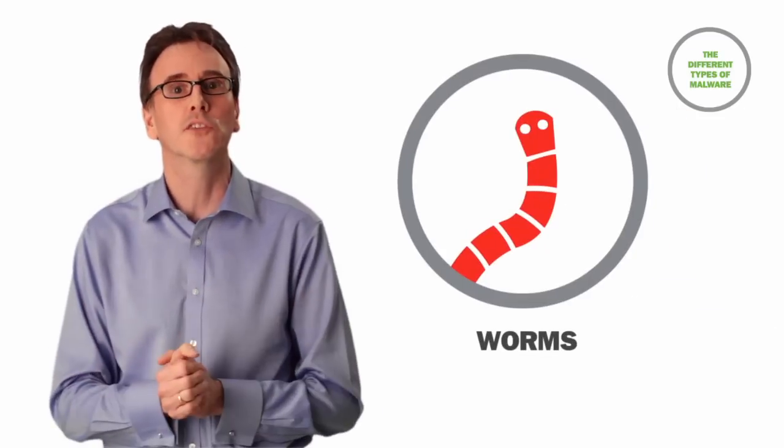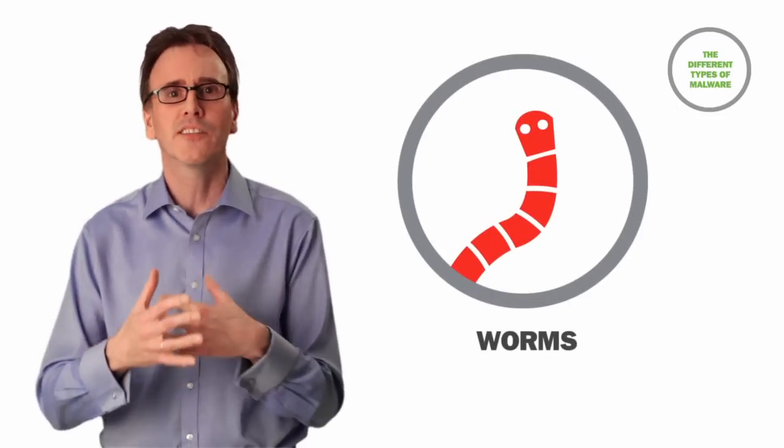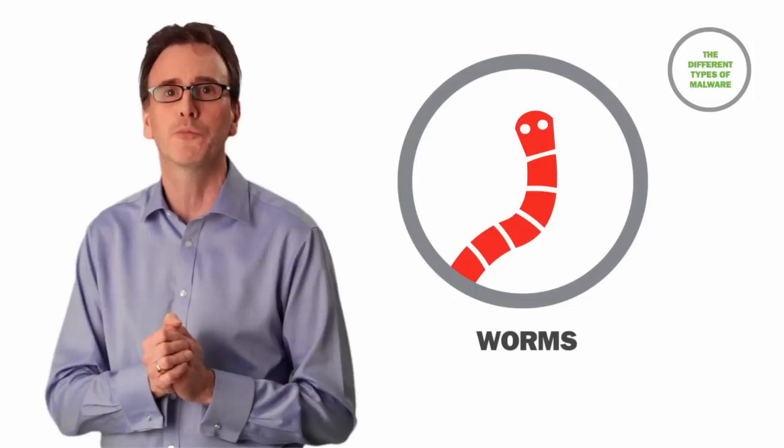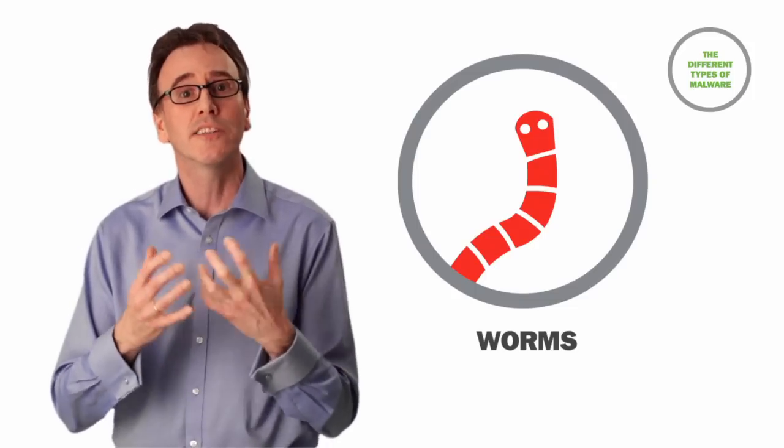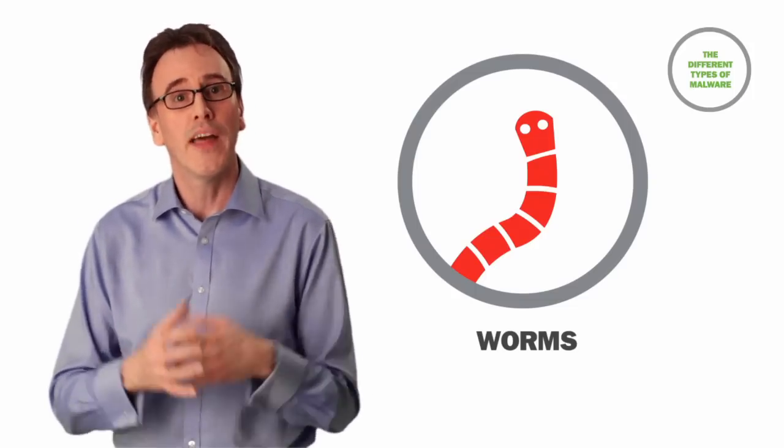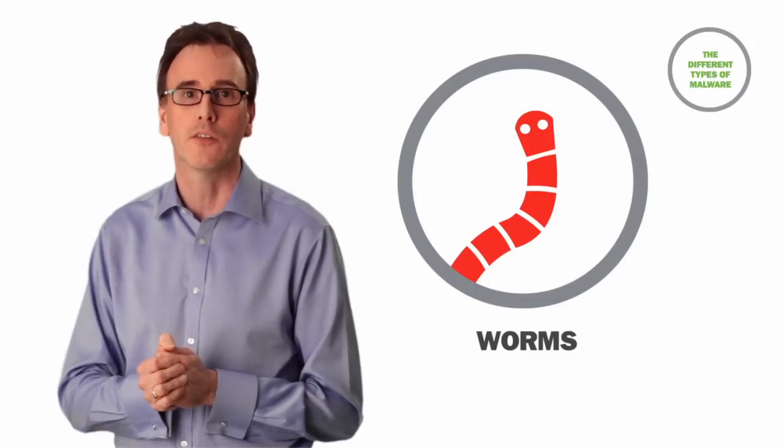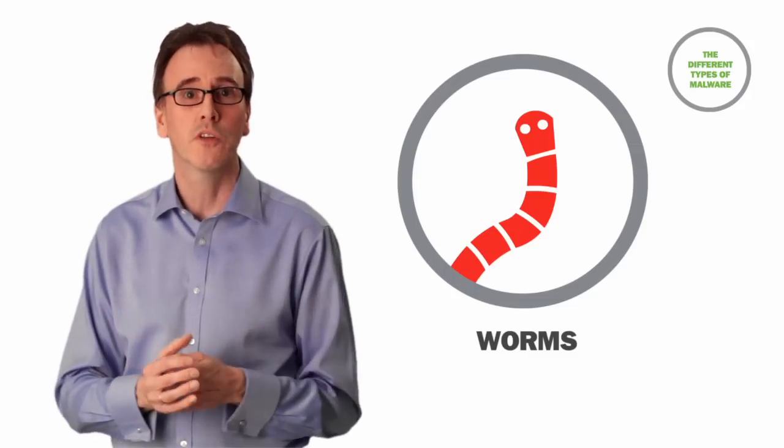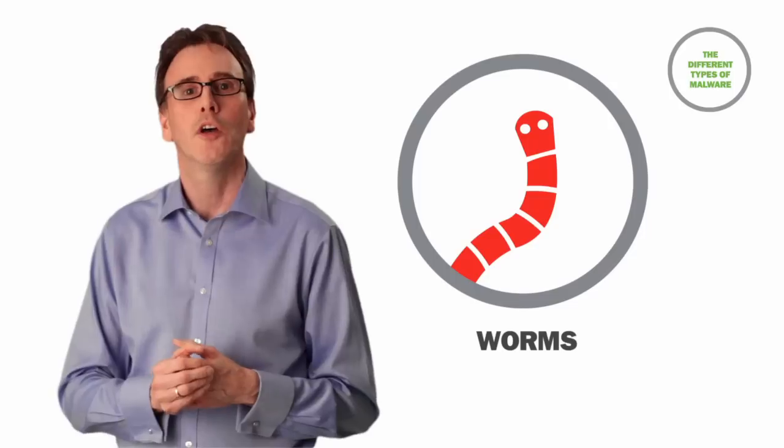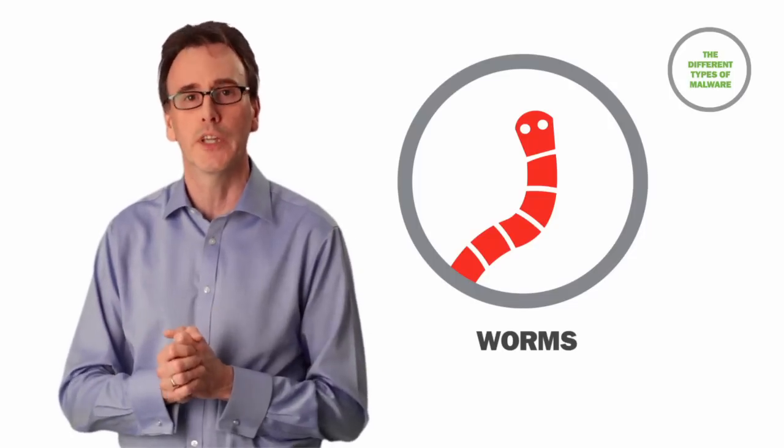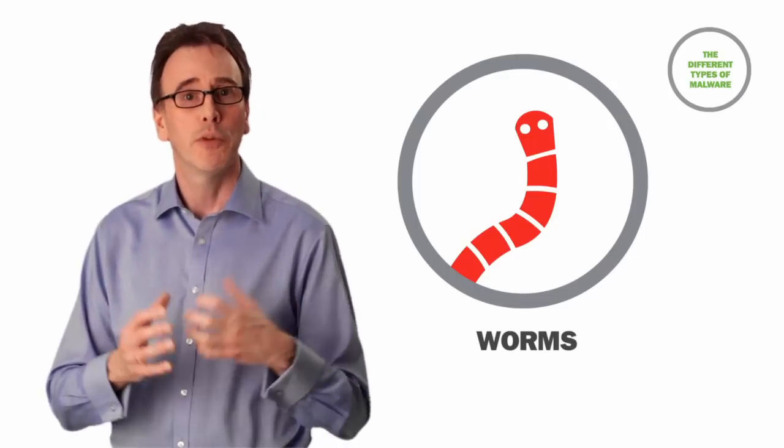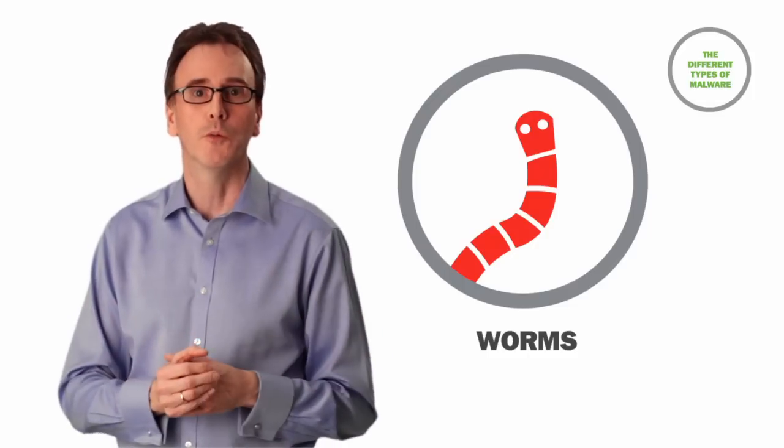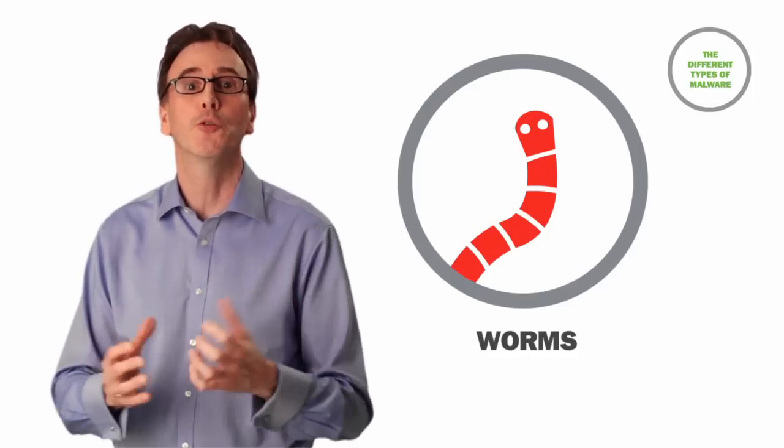A worm also spreads automatically. However, instead of writing its code to multiple objects on a disk, it installs itself once and then looks for another computer to infect. Some worms, for example email worms, require the action of an individual in order to spread. But others, such as network worms, spread without the need for human interaction.